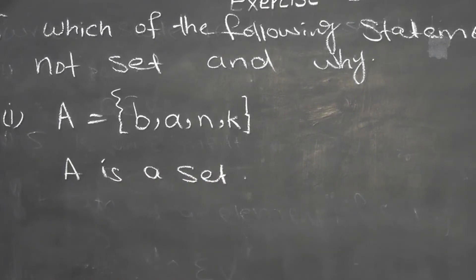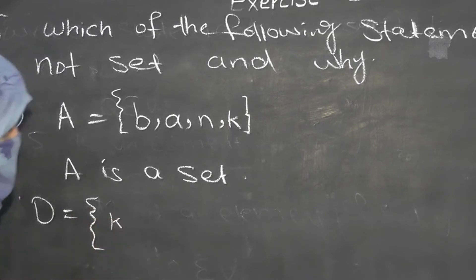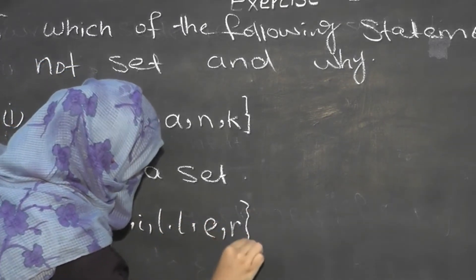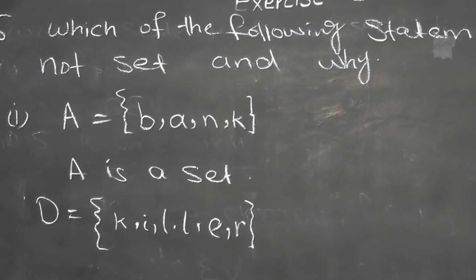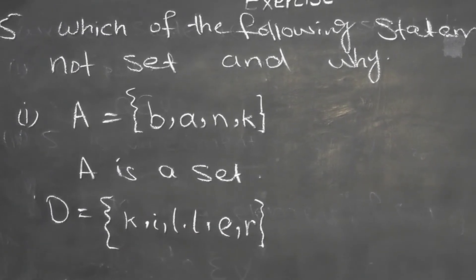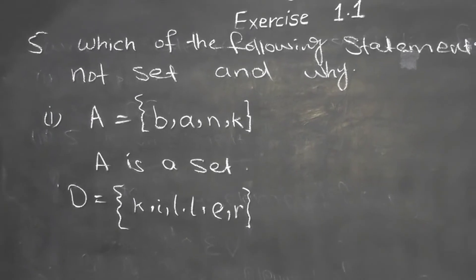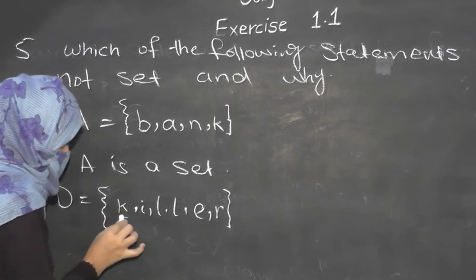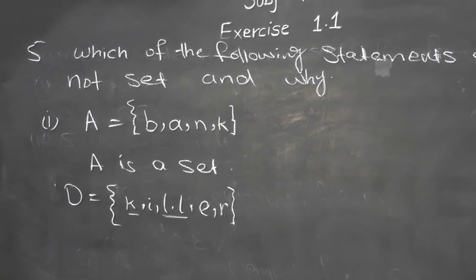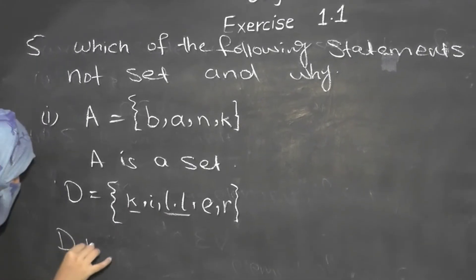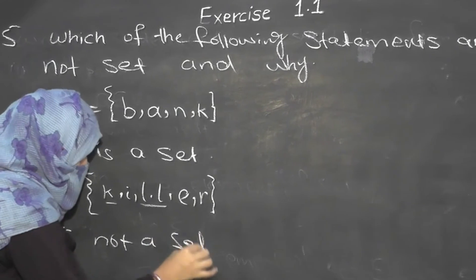Now let's look at part (D). In this set D, you are given the letters of the word 'KILLER': K, I, L, L, E, A. You have to determine whether this is a set or not. We check its two properties — distinct and well-defined. Looking at the letters, 'L' appears two times in this set, which means it is not distinct. Therefore, D is not a set because it is not distinct.